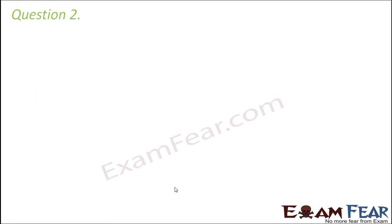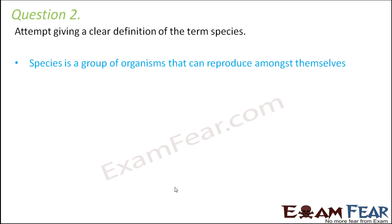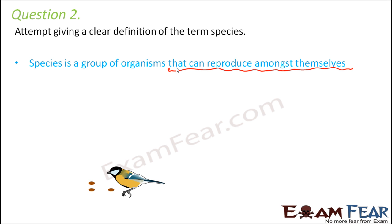Question number two: attempt giving a clear definition of the term species. When we talk about species, it is always a group of organisms that can reproduce amongst themselves. This is the most important criterion — if they can interbreed amongst themselves, they belong to the same species.